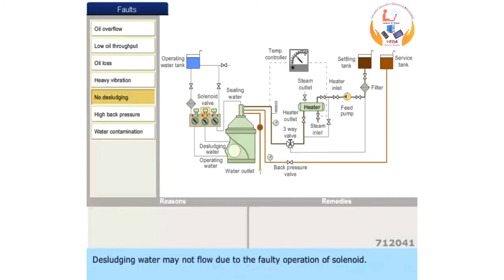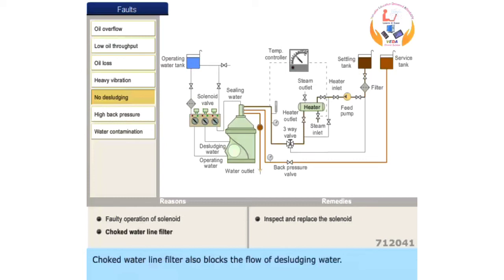Desludging water may not flow due to the faulty operation of solenoid. Inspect and replace the solenoid. Choked water line filter also blocks the flow of desludging water. Clean the filter.